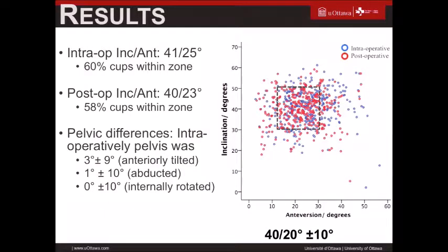Looking at the results, the mean inclination and anteversion were what you would expect. We had about 60% within the safe zone, which we defined as 40 degrees of abduction and 20 degrees of anteversion. The pelvic differences intraoperatively were approximately three, one, and zero degrees — so not large differences overall.